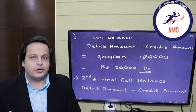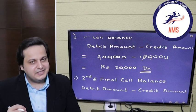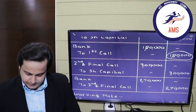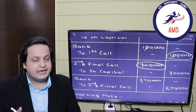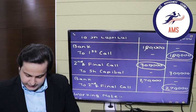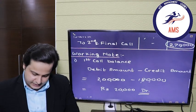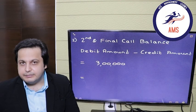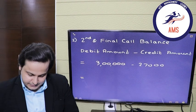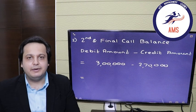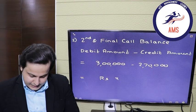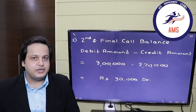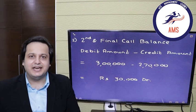For the second and final call, the debit amount was 3 lakh rupees and the credited amount was 2 lakh 70,000 rupees. So 3 lakhs minus 2 lakh 70,000 gives us a debit balance of 30,000 rupees. This is how you account for call-in arrears without using the call-in arrears account.